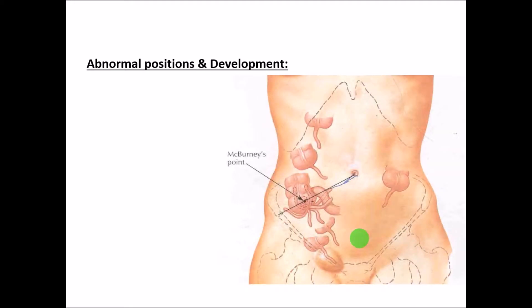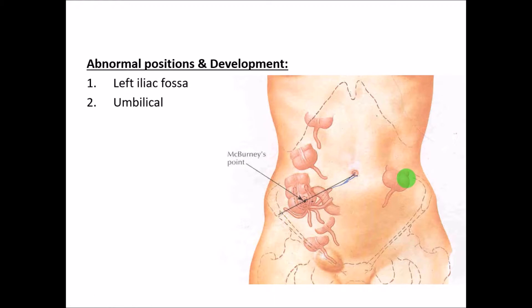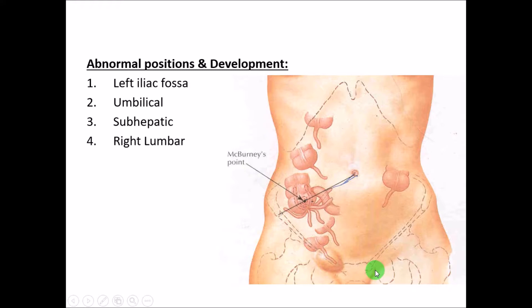Coming to abnormal positions — depending on the rotation of the gut, there will be different abnormal positions of the cecum. One of the common ones is the left iliac fossa, where instead of being on the right side it is present on the left. Other abnormal positions include near the umbilicus, sub-hepatic (below the liver), right lumbar, and the pouch of Douglas.